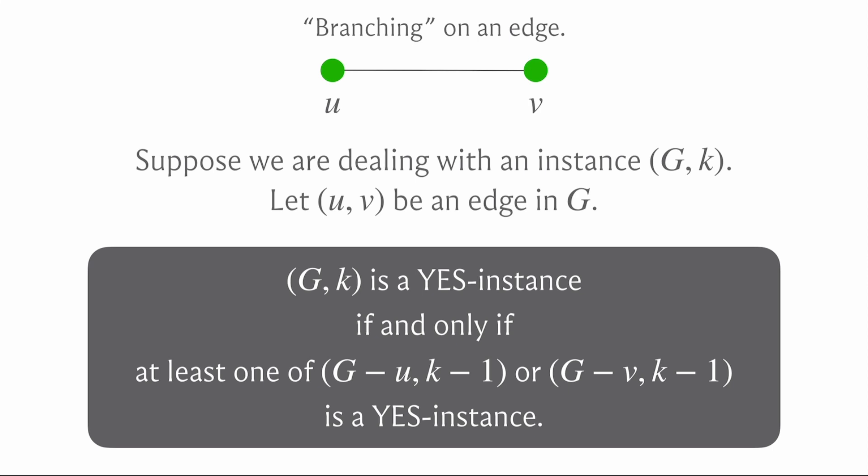Conversely, if G minus v, k minus 1 is a yes-instance witnessed by some vertex cover S′, then S′ union v is a valid vertex cover for G: edges incident to v are covered by v, and any other edge is covered by S′ since it appears in G minus v. This gives us a natural recursive algorithm: on instance G, k, invoke the algorithm on G minus u, k minus 1 and G minus v, k minus 1, and return yes if at least one response is yes.